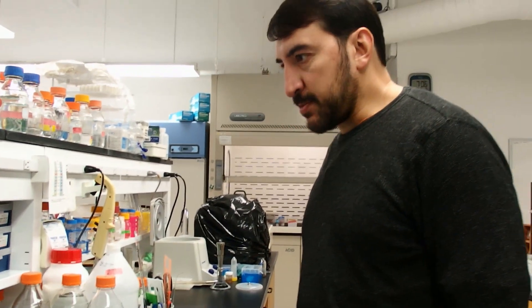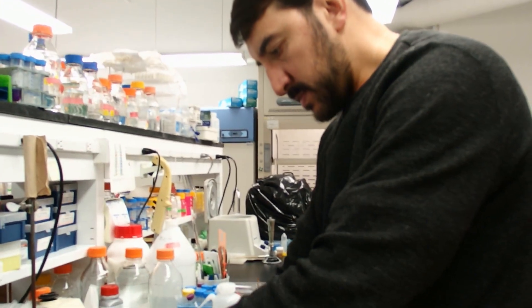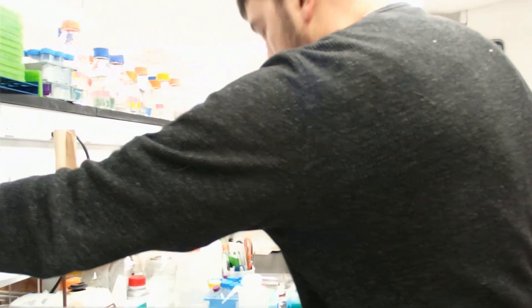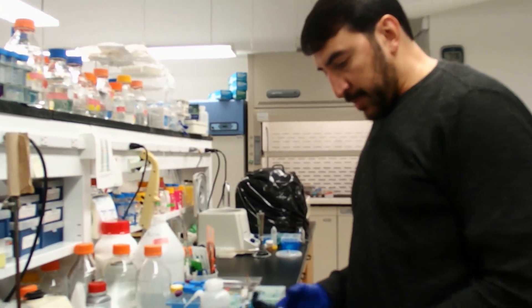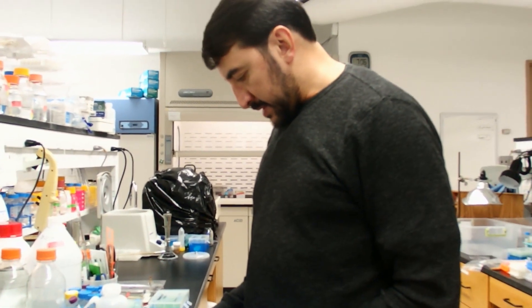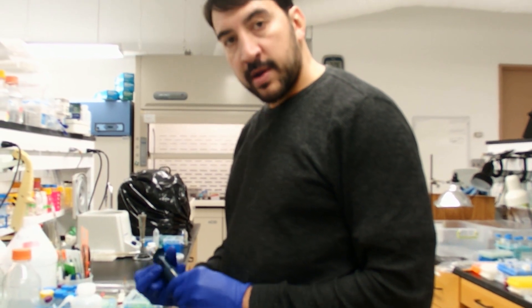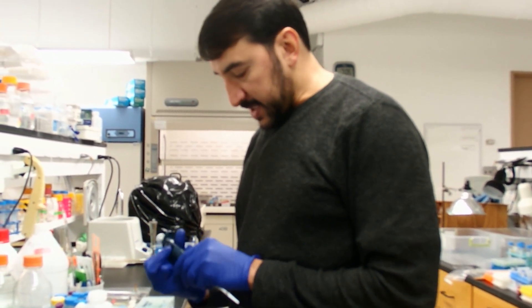Now we want to add isopropanol to precipitate that. We're going to add 0.6 volumes of isopropanol. So we had 24 microliters, and we're going to add 14.4 microliters of isopropanol.